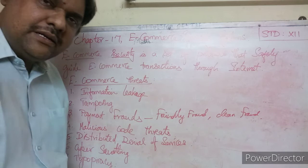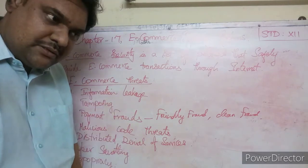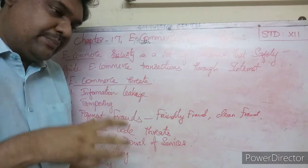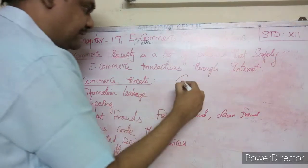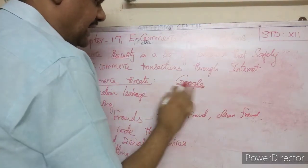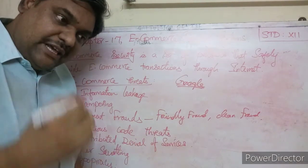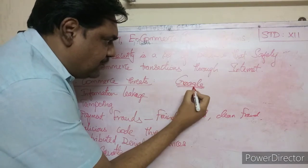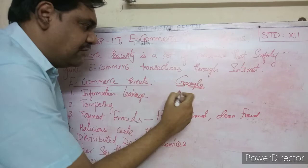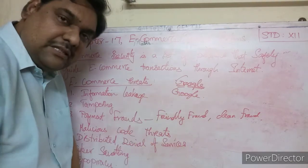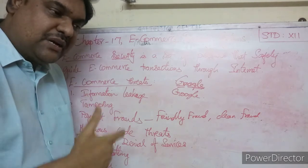Another related type is typosquatting, which is a type of piracy. In typosquatting, attackers take advantage of typing mistakes users make when entering website names, registering misspelled versions of famous domain names to redirect traffic.